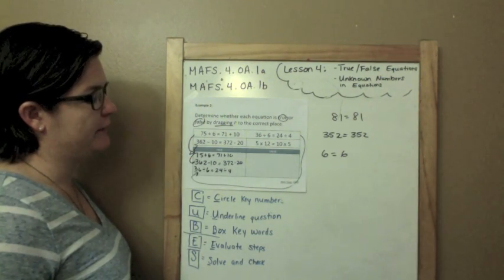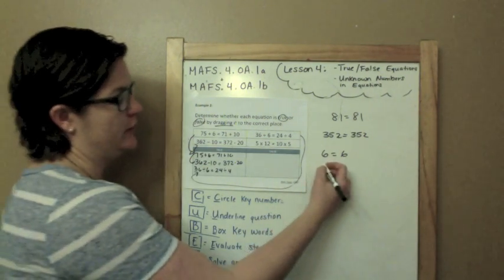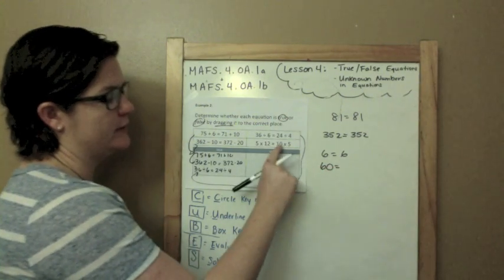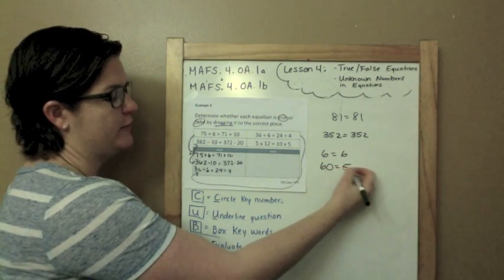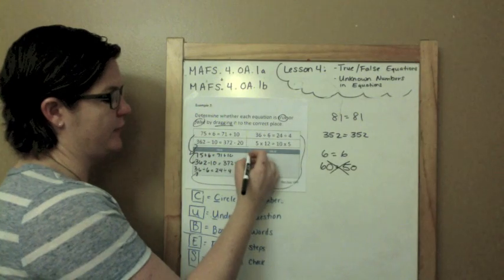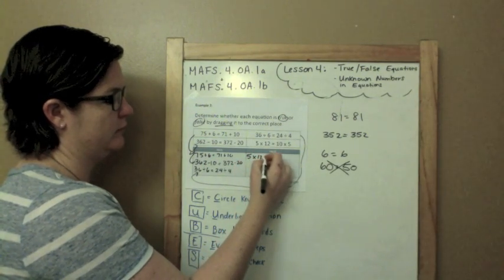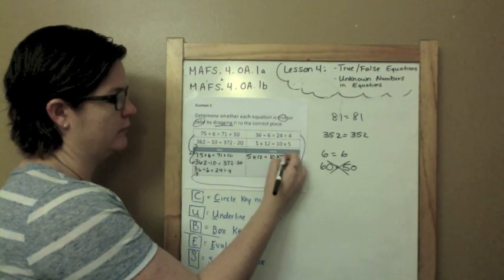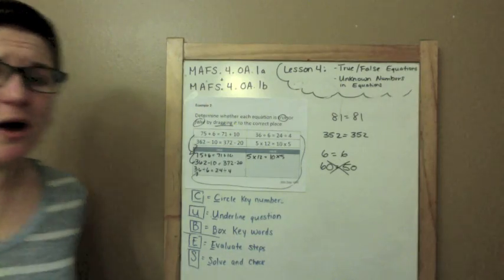And 5 times 12 is 60. 10 times 5 is 50. That's false. And that's how you solve that one!